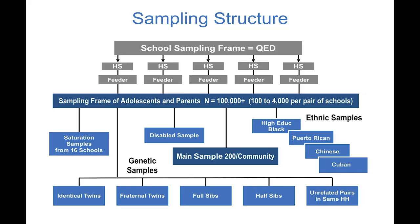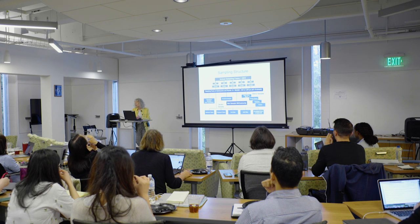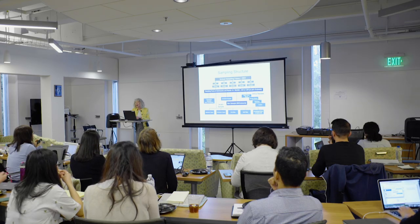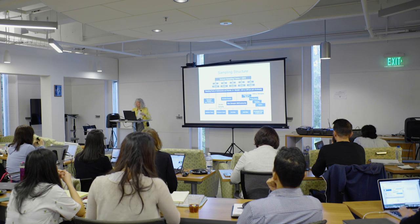Here's the wave one sampling structure. We selected 80 high schools from a list of all high schools in the United States — private, public, magnet, and special ed — and also selected a feeder school to each high school based on the probability of contribution of the student proportion. We ended up with a pair of either middle or junior high school and a high school in 80 different communities across the United States. We administered a brief in-school questionnaire that asked general questions, which served as the basis for selecting other samples. For example, we asked adolescents to nominate their five best male friends and five best female friends by selecting them off the school roster.